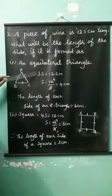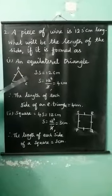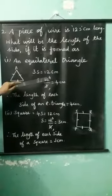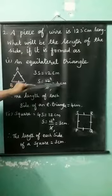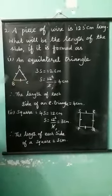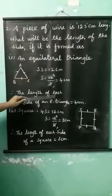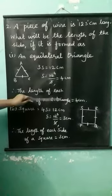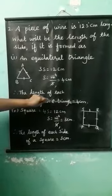Okay. So, 3s is equal to 12 cm. S is equal to 12 divided by 3 is equal to 4 cm. 1 times 3 is 3. 4 times 3 is 12. So, 4 cm. Therefore, the length of each side in triangle is equal to 4 cm.